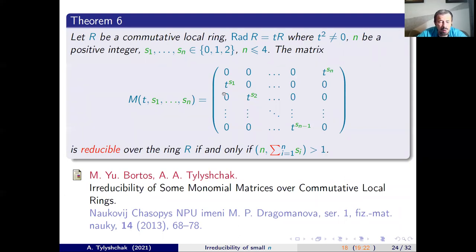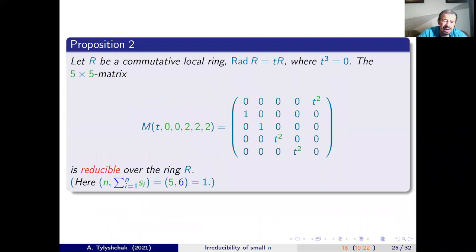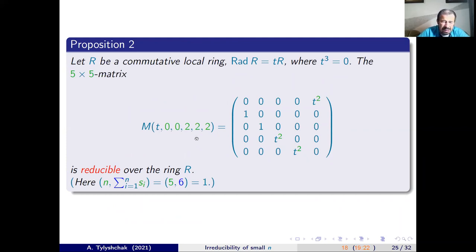More interesting is the size 5 case, in which we found a square matrix which is reducible but for which the size and the sum of all exponents are co-prime — the matrix is reducible despite being co-prime.